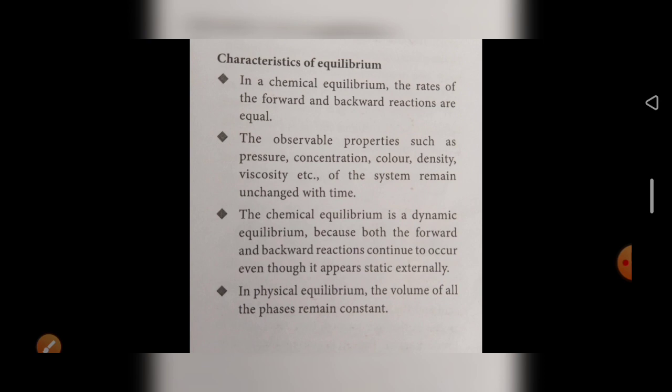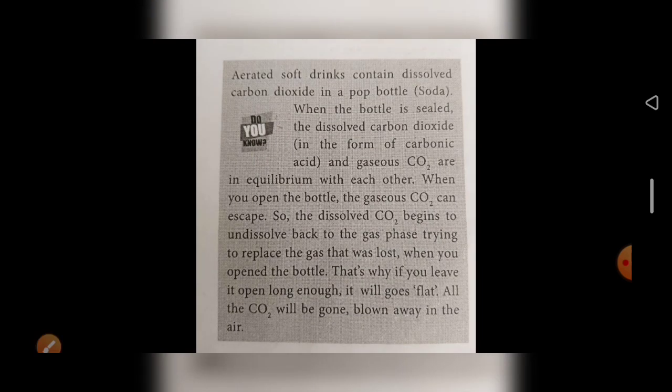What are the characteristics of equilibrium? In chemical equilibrium, the rate of the forward and the backward reactions are equal. Observable properties such as pressure, concentration, color, density, and viscosity of a system remain unchanged with time. Chemical equilibrium is a dynamic equilibrium — both the forward and backward reactions continue to occur even though it appears static externally. In physical equilibrium, the volume of all phases — liquid, gaseous, and solid state — remains constant.